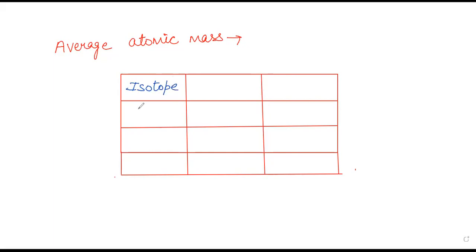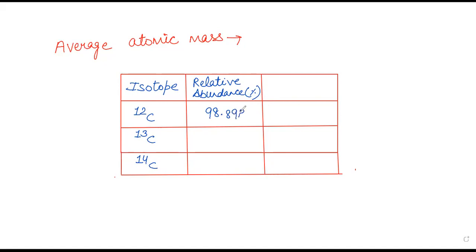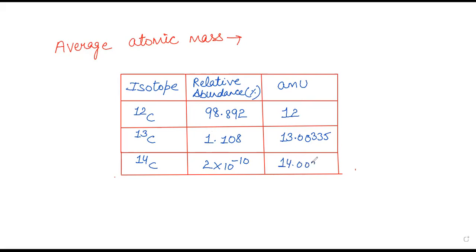Table में तीन columns हैं। First column में isotopes — carbon के isotopes: C-12, C-13, और C-14। Second column में relative abundance percentage: 98.892%, 1.108%, और 2 into 10 to the power minus 10। Third column में atomic mass unit: C-12 का 12, C-13 का 13.00335, और C-14 का 14.00317 — यह values atomic mass unit में हैं।